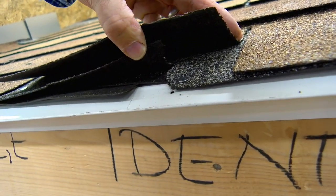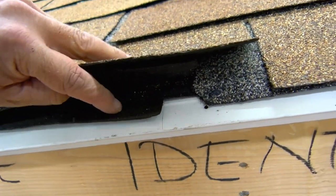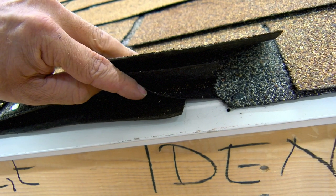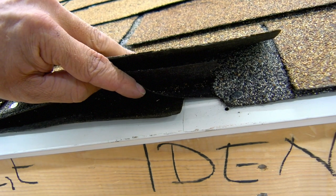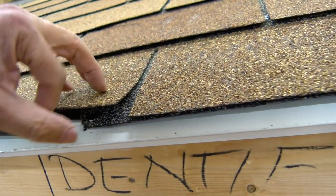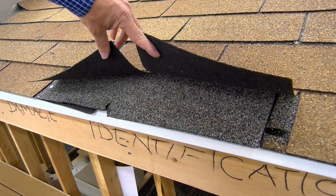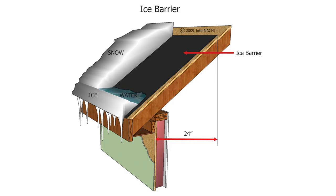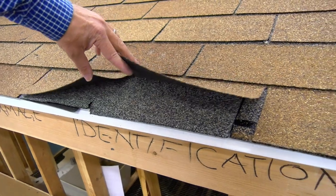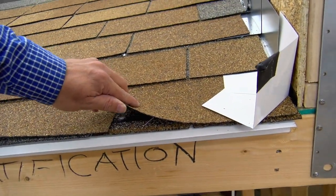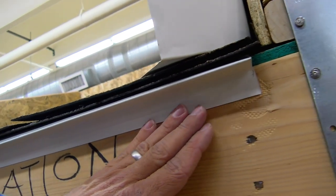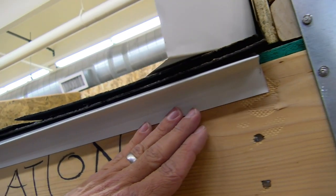That fastener is installed not even into the substrate, and the two underlayment pieces have no overlap — so that's a defect. The starter shingle is really important; this one is actually upside down. If you had an employee you wanted to test, that's a really good catch. Also, the ice and water shield — or ice barrier — in some climates should be installed to a point 24 or 36 inches from the exterior wall line.